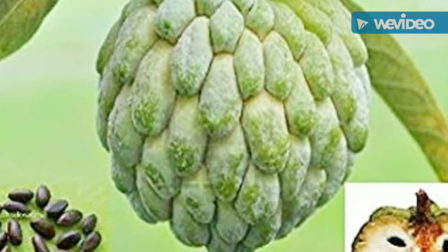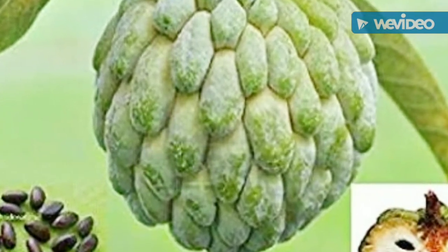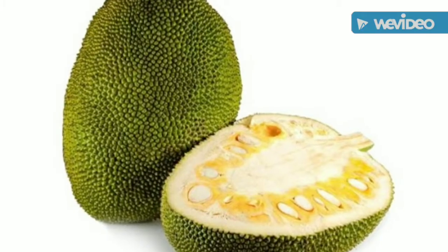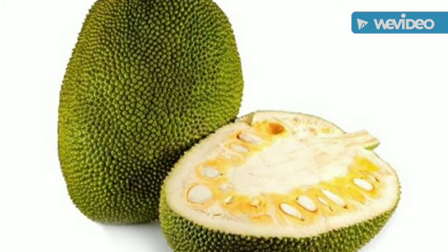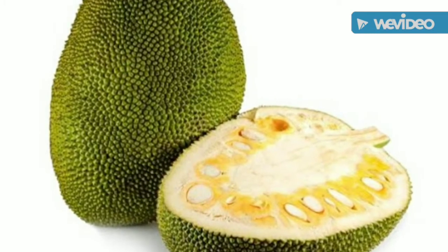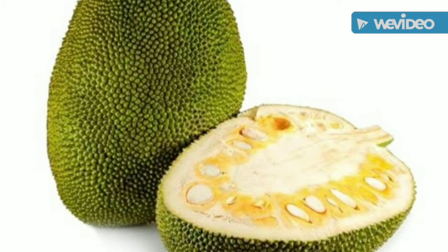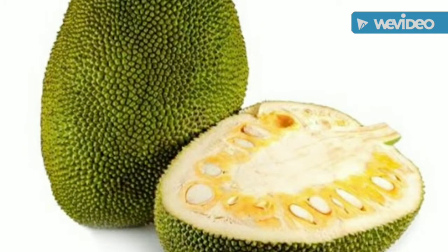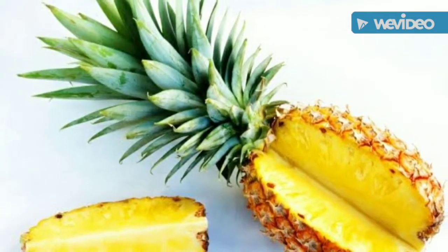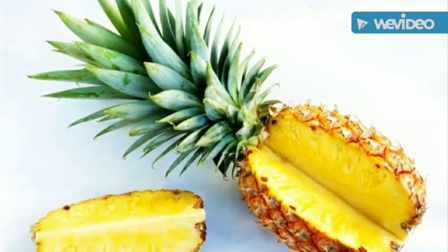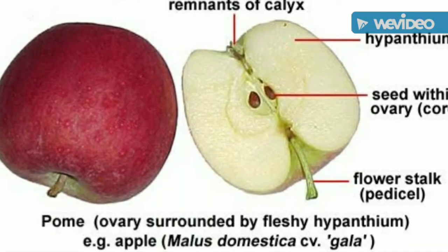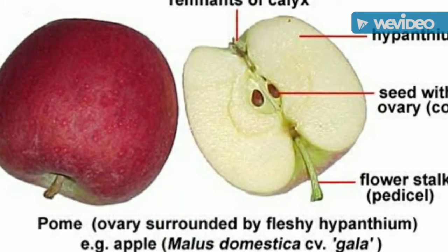This one is the aggregate fruit of sitafal (custard apple). Fruitlets are easily detached from one another because an apocarpous gynoecium is present. Composite or multiple fruit of jackfruit — psorosis. Pineapple is also a composite or multiple fruit because a number of fruits are aggregated with one another.